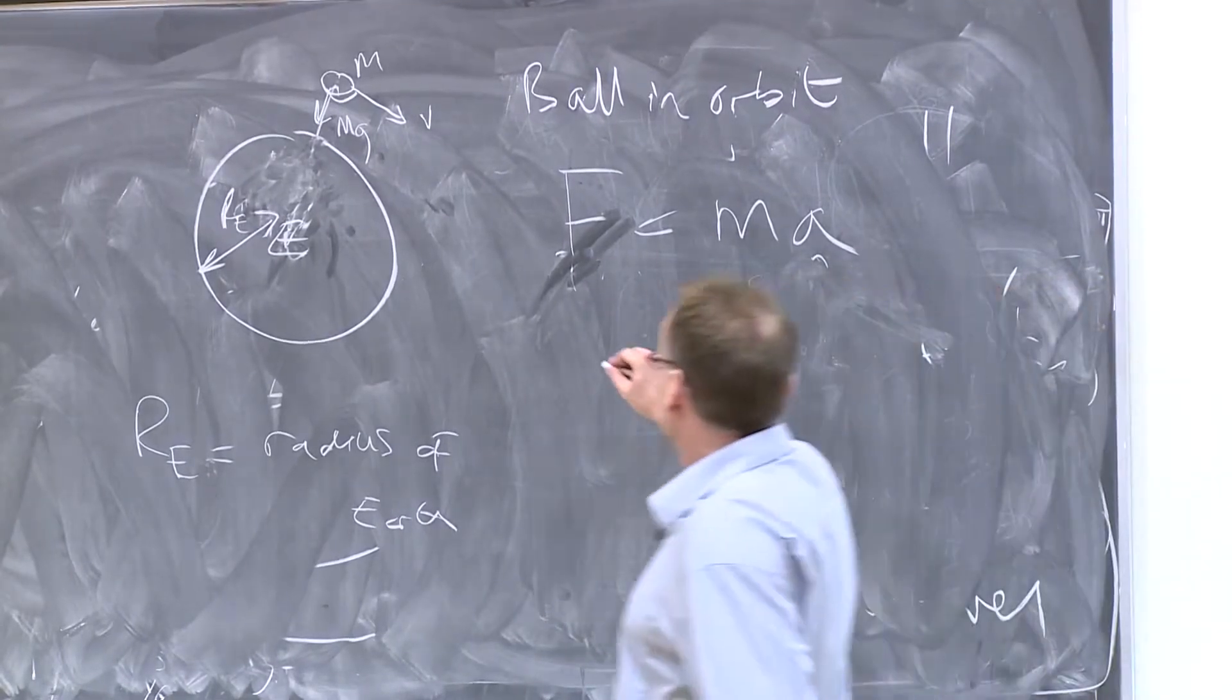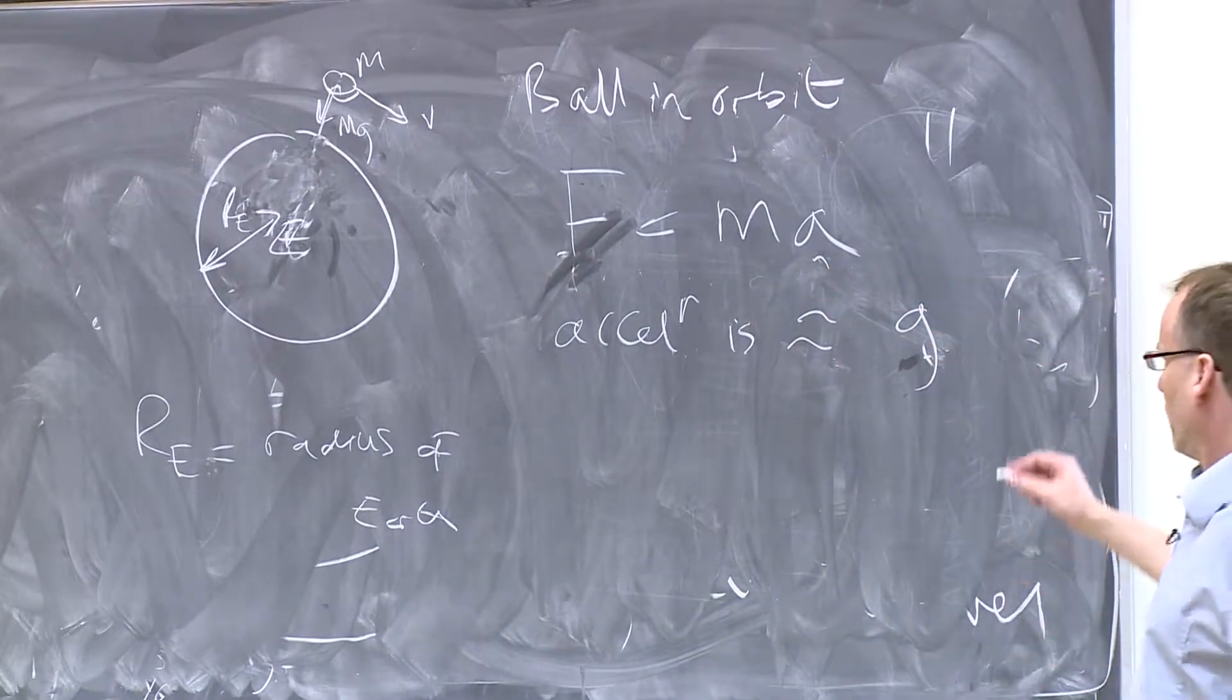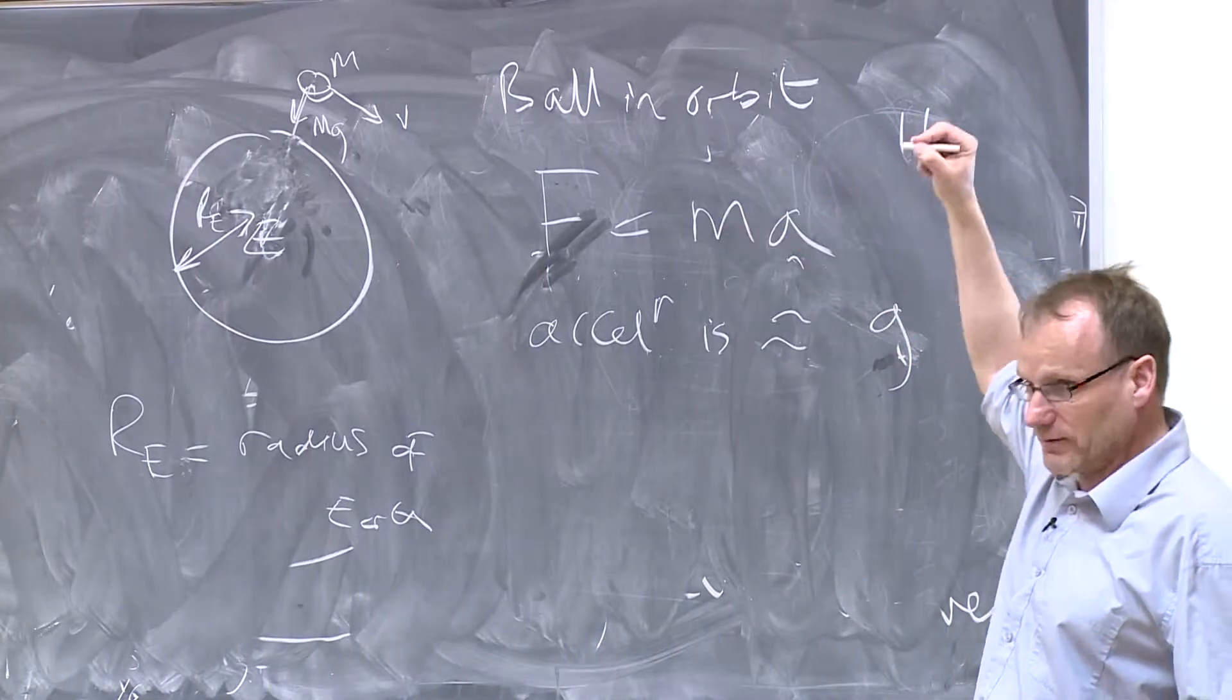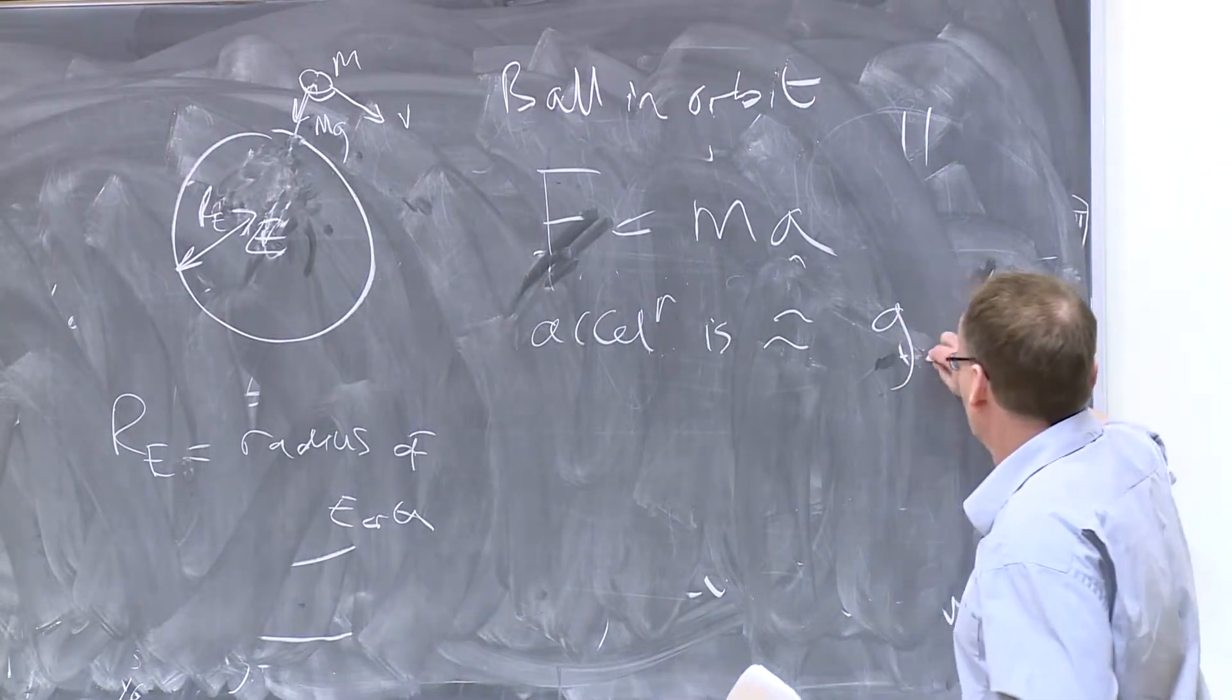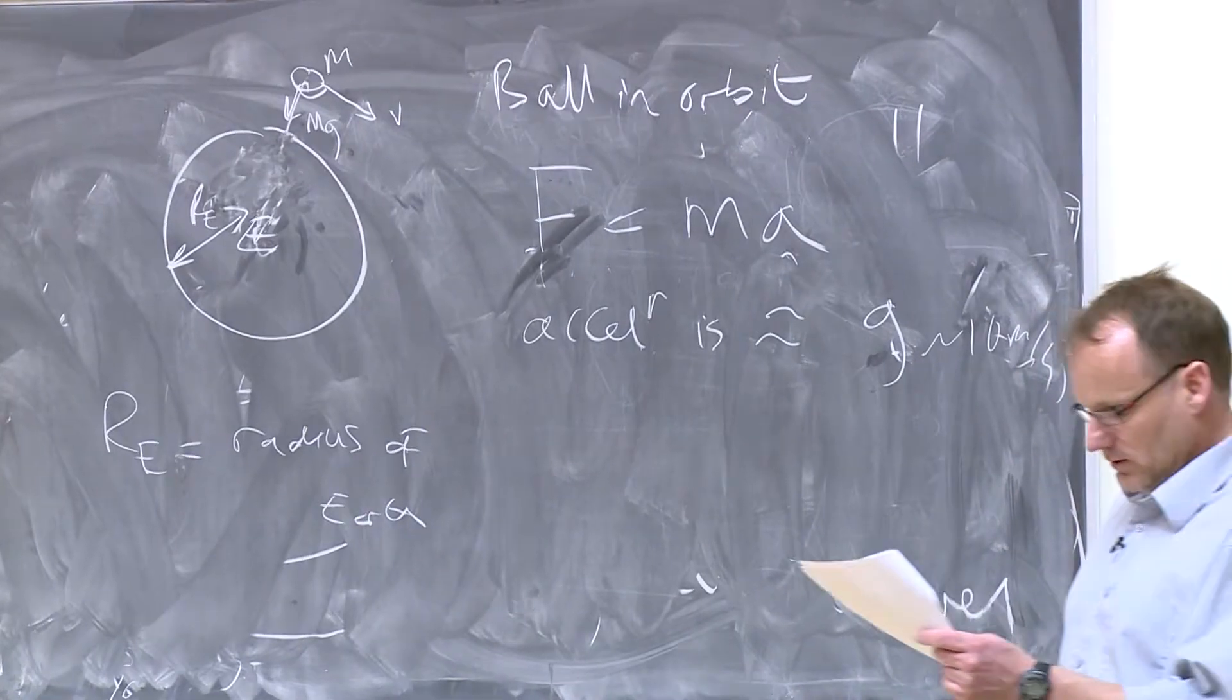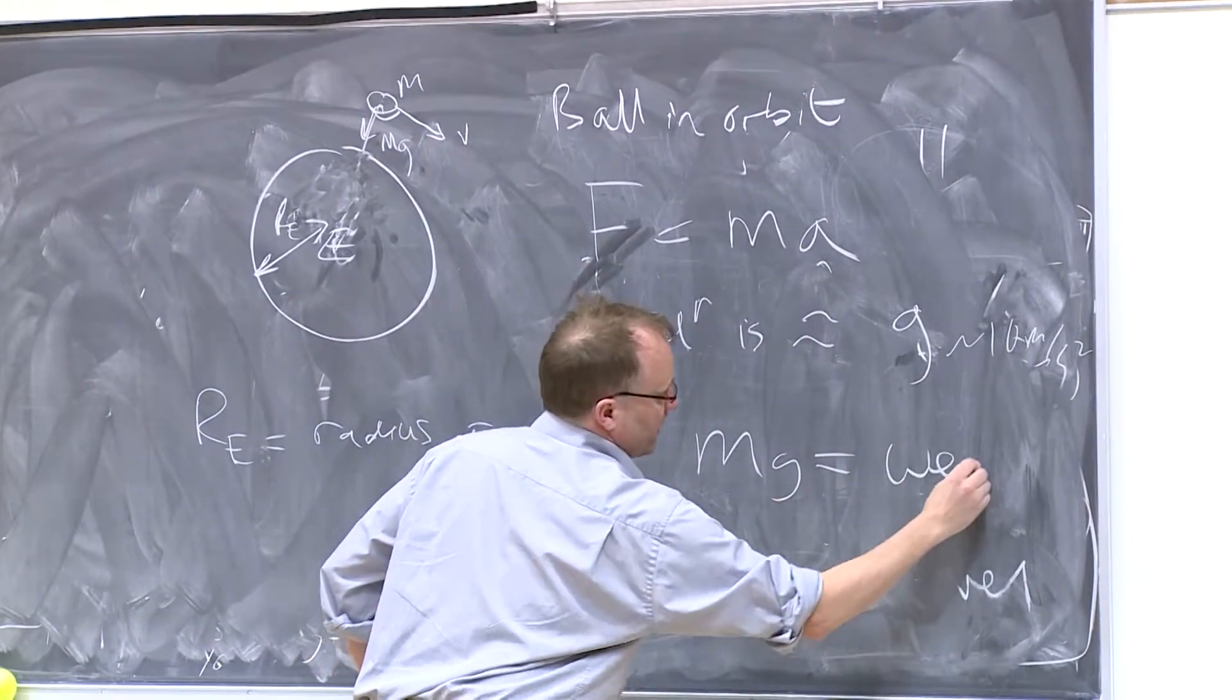So the acceleration is approximately, we can say G. Or we can say minus G if you want. But normally, for circular motion, we always have the center of the circle being positive. So it's about 10 meters per second squared. So F is equal to Mg, which is equal to the weight.